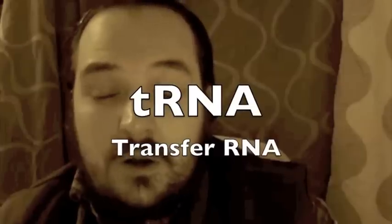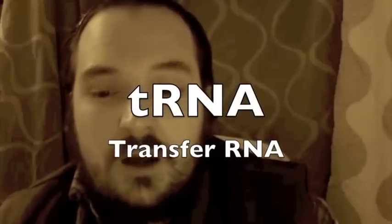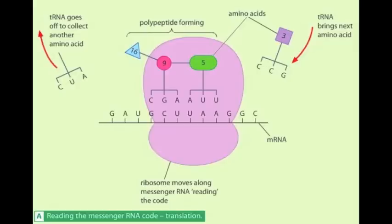Once the strand of mRNA attaches to a ribosome, the code is read by a second sort of RNA called transfer RNA or tRNA. The job of tRNA is to carry amino acids to the ribosome and link up with the mRNA.